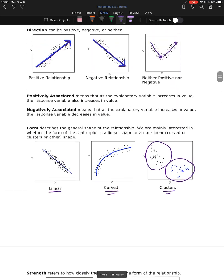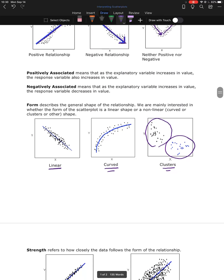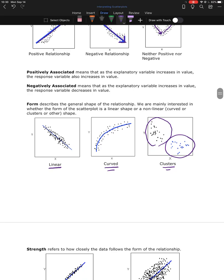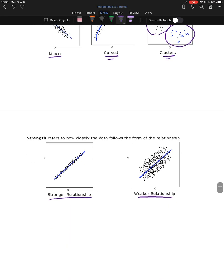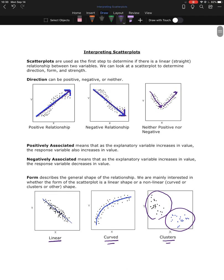So these are the three things that we're going to be looking at when we interpret our scatterplots. We're looking at the direction that the dots are moving, the shape that the dots take, and how close those dots are to that shape. So strength, form.